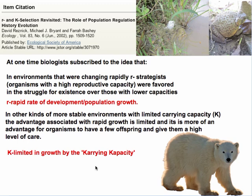This description of reproductive strategies as K or R is today considered very simplistic and somewhat naive. New papers, such as one by Resnick, Bryant, and Bashy titled 'R and K selection revisited: the role of population regulation,' illustrate that biologists are currently reflecting on how valid this theory of R and K selection actually is.